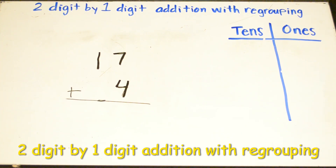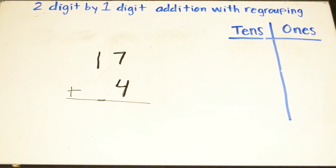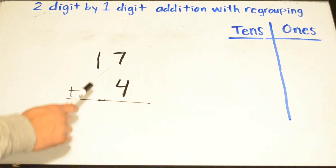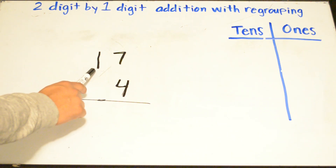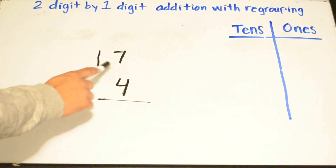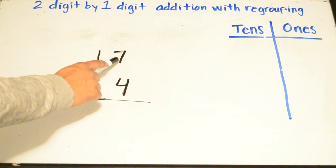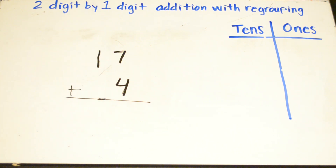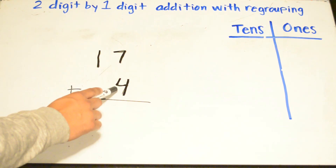Today's video we are going to be talking about addition with regrouping. Our first examples are going to be about two-digit by one-digit addition with regrouping. In this example we have 17 plus 4. We know that 1 is in the tens place, 7 is in the ones place, and the 4 on the bottom is in the ones place.